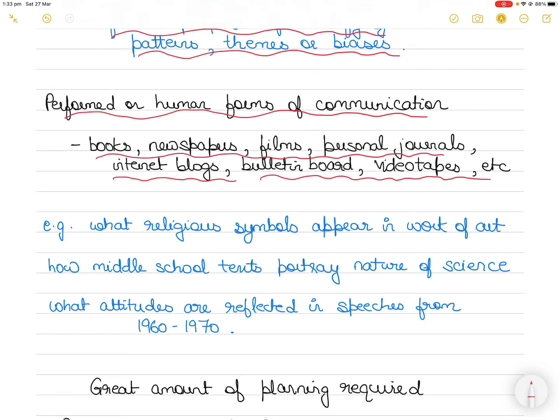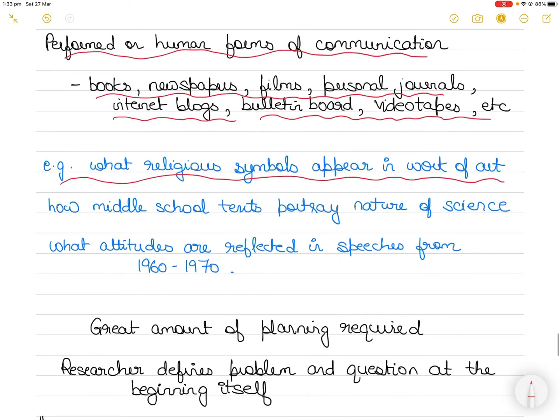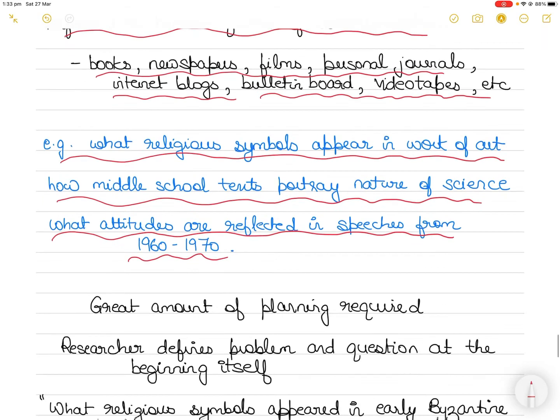For example, a researcher might use content analysis to determine what kind of religious symbols appeared in work of art during a time period, or how middle school texts portrayed the nature of science, or what attitudes were reflected in speeches from a certain time period in a particular era of history.